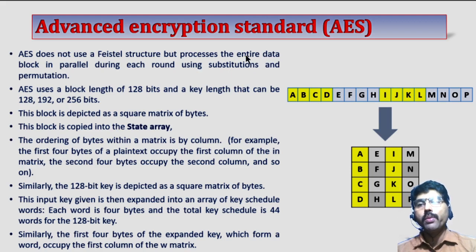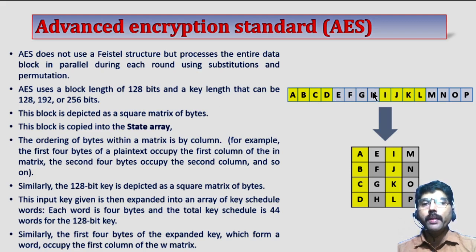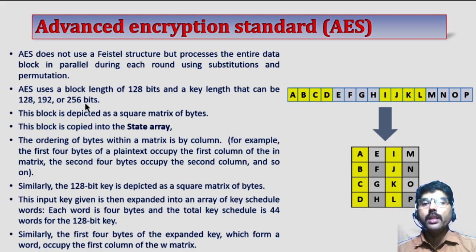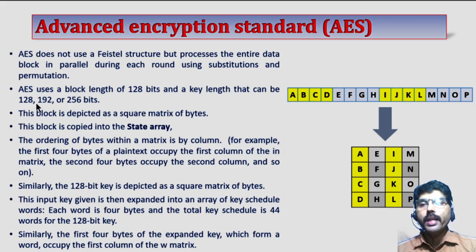All the substitutions and permutations will be done in parallel, just like DES. In AES, as the proposal is given, the block length is 128 bits and the key length is also 128, 192, or 256 bits. But in general most of the times we are using 128 bits, so I am explaining this algorithm with a consideration of 128 bits. The algorithm is the same for the remaining key sizes.